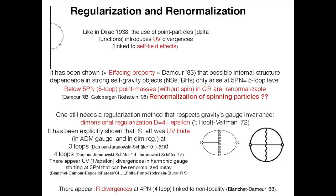When you do that, because you have replaced extended objects by point particles, you get infinities. The simplest case to understand why: I have a world line which is a point mass; this point mass generates a gravitational field, and I need to compute the value of the gravitational potential on the position where the world line is. But this is a 1/r potential near the particle, which means computing 1/r at r equals 0. So you get infinities.